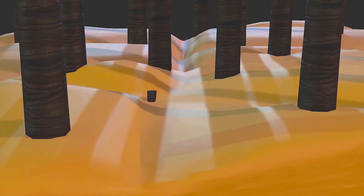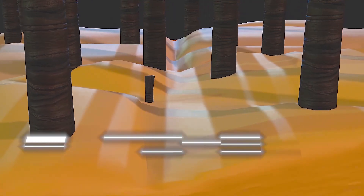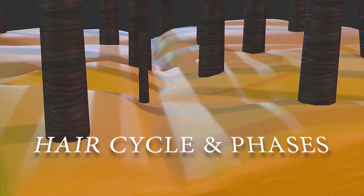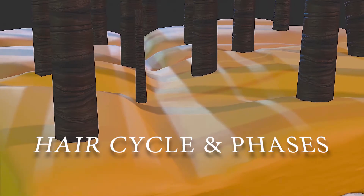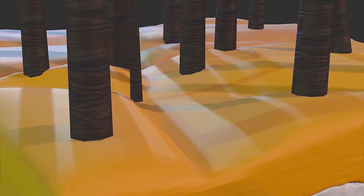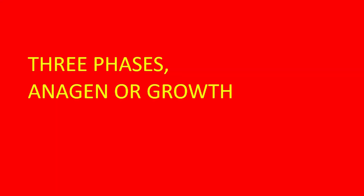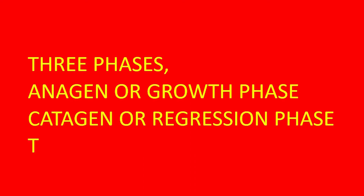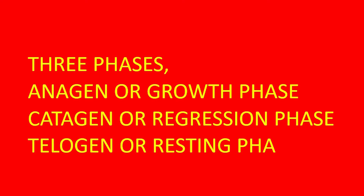To understand how hair grows, let's look at the hair cycle and its different phases. The natural hair growth cycle has three phases: anagen or growth phase, catagen or regression phase, and telogen or resting phase.